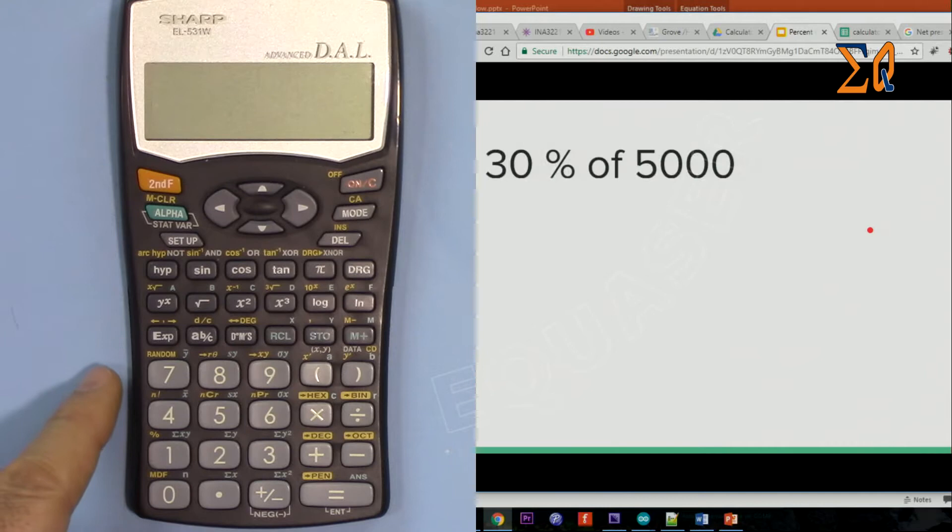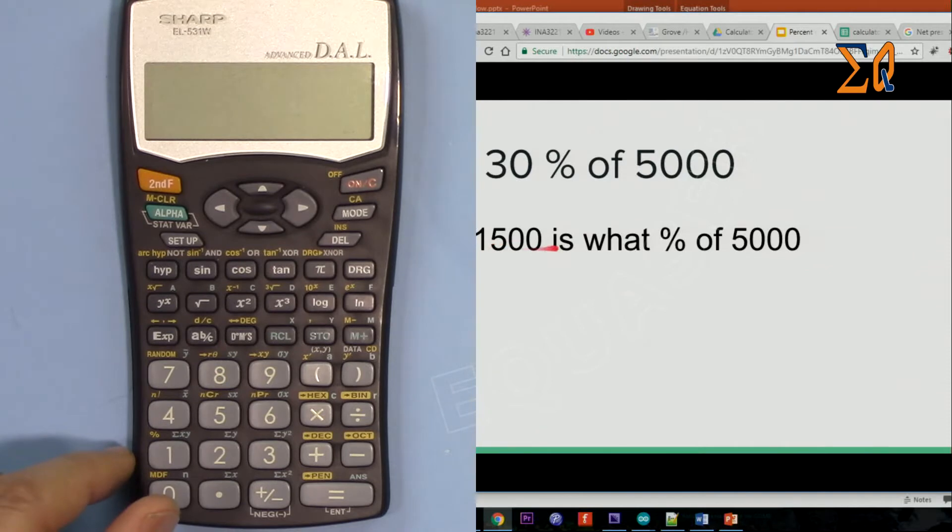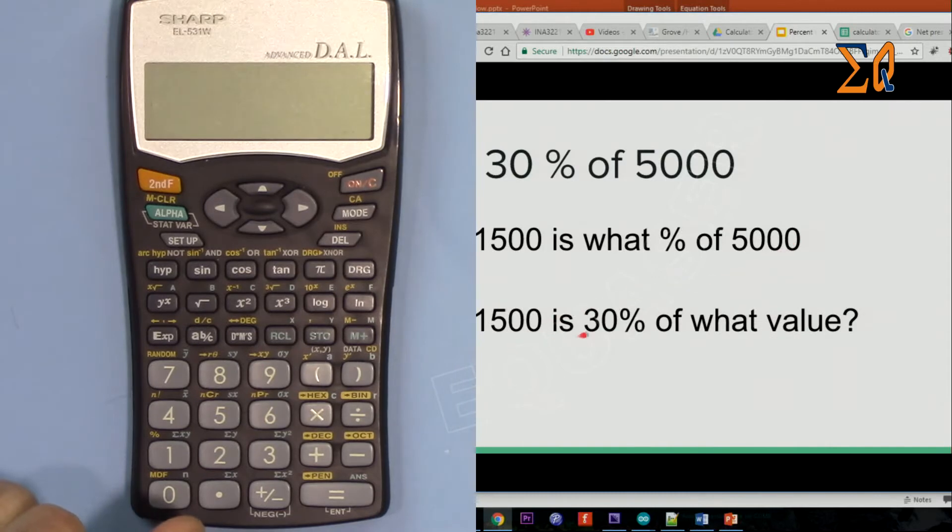The question will be posed as: what is 30% of 5,000, which is the most basic one. Then we will have 1500 is what percent of 5,000. And the third way it will be asked is 1500 is 30% of what value.